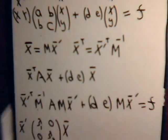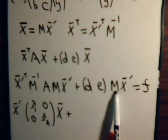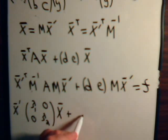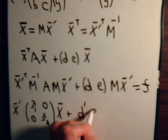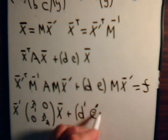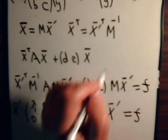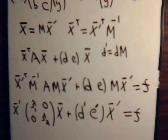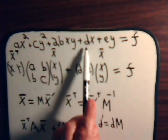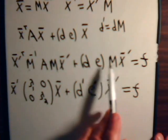This equation with the substitution has become the diagonalized form, still equal to f. For the linear terms, the row vector d, e multiplied by the model matrix M gives new coefficients: d prime equals d times the model matrix M, where d was the coefficient on the x term, and e prime equals e times the model matrix M, where e was the coefficient on the y term.